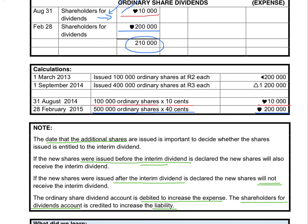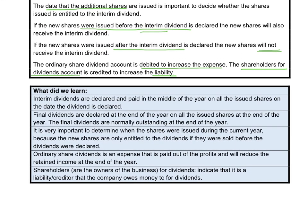Just to recap: the date that additional shares are sold during the current financial year is very important. If the shares were sold before the interim dividend was declared, they will receive it. If the shares were sold after the interim dividend was declared, they will not receive it. Interim dividends are declared and paid in the middle of the year on all issued shares on the date that it was declared.